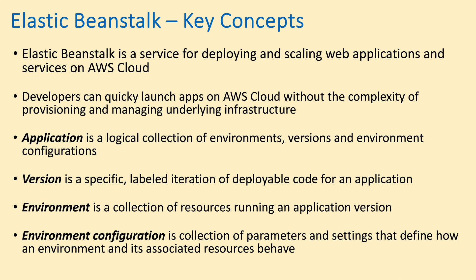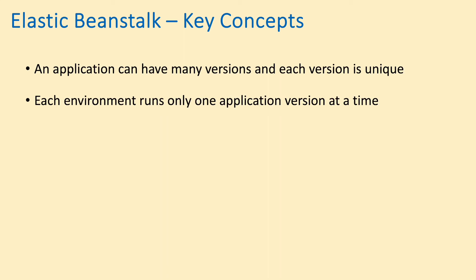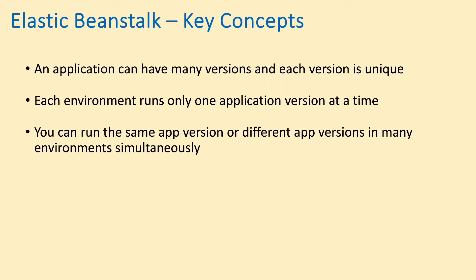An environment configuration is the collection of parameters and settings that define how an environment and its associated resources behave. An application can have many versions; each version is unique and each environment runs only one application version at a time. You can run the same or different application versions in many environments simultaneously.